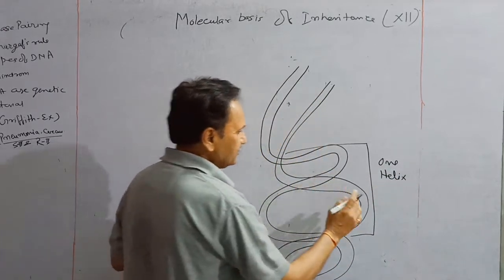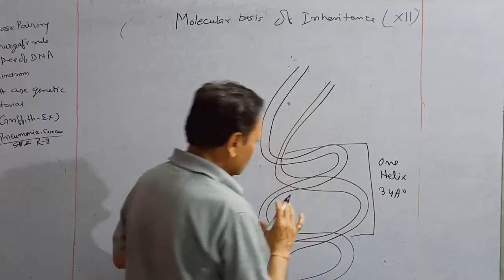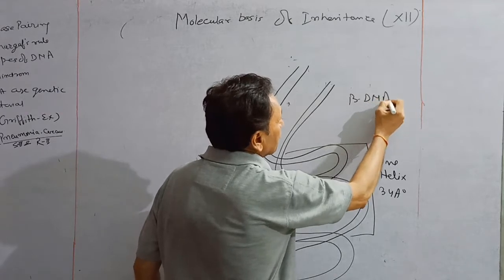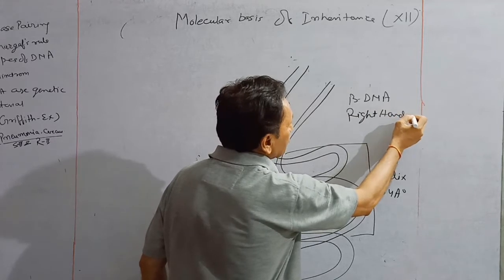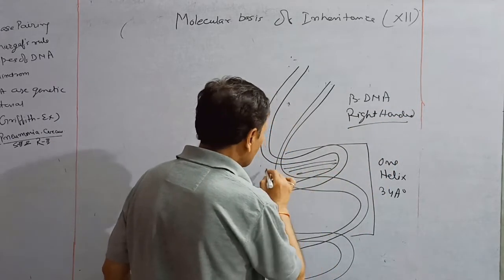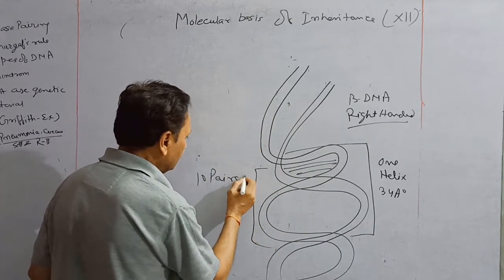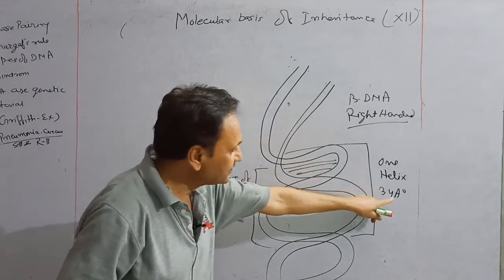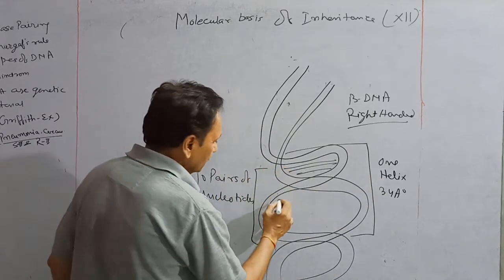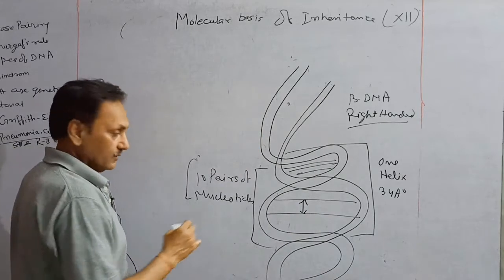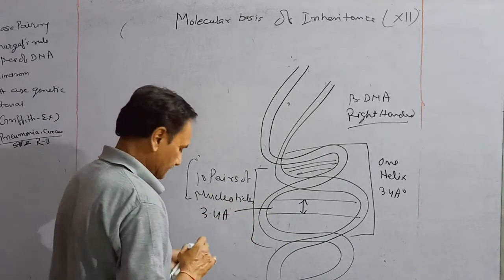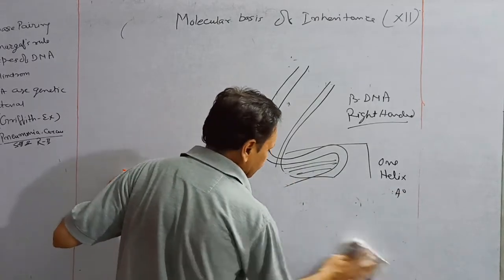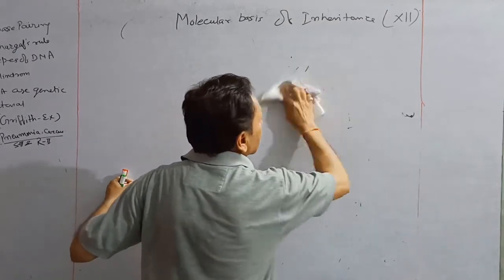The helix is made up of two strands, and the distance of one complete helix is 34 angstroms. Watson and Crick worked on B-DNA, which is a right-handed DNA. B-DNA has 10 pairs of nucleotides present in one helix, and their total distance is 34 angstroms. So the distance between two adjacent nucleotide pairs is 3.4 angstroms. Now we will discuss base pairing in this particular DNA.